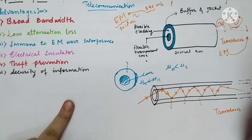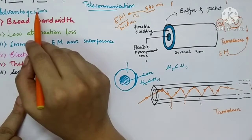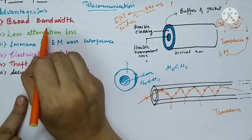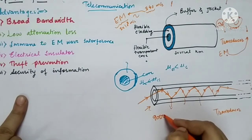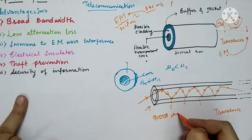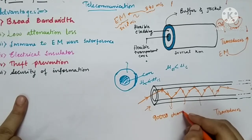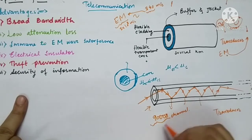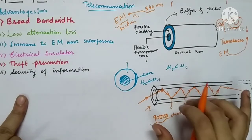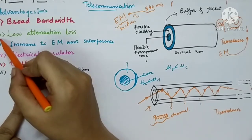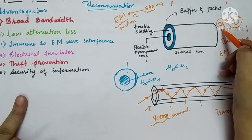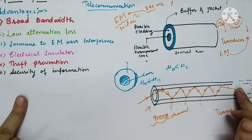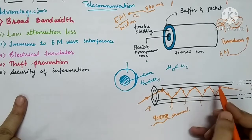This is the functioning of optical fiber, which is basically used for telecommunication. Let's look at the advantages. First, broad bandwidth — one optical fiber can carry 90,000 signals or 90,000 channels. It has a very broad bandwidth, meaning a wide range of frequencies can be transferred through a single optical fiber cable. Second, low attenuation loss — there is no loss of sound or video signal throughout the optical fiber because there is no leakage of light rays from any point.